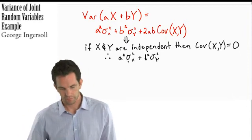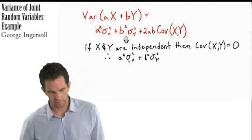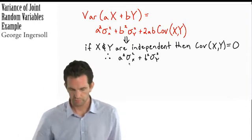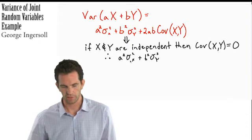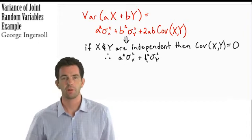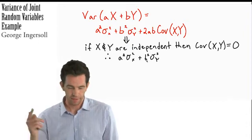We'd have a squared times the variance of x plus b squared times the variance of y. It's that simple.